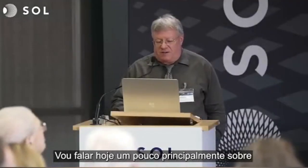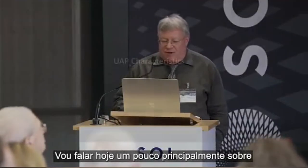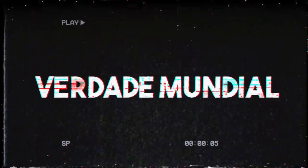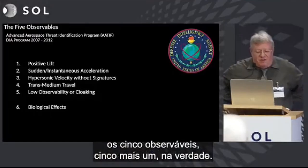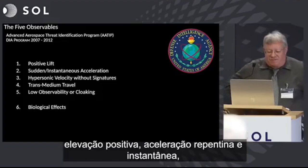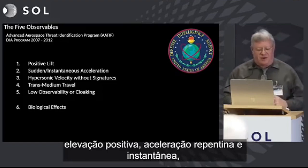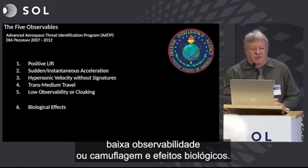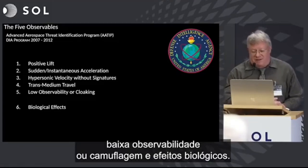I'm going to talk mostly about characteristics of UAPs related to physics. From the AATIP program, we have the five observables — five plus one really: positive lift, sudden and instantaneous acceleration, hypersonic velocity without signatures, transmedium travel, low observability or cloaking, and biological effects.